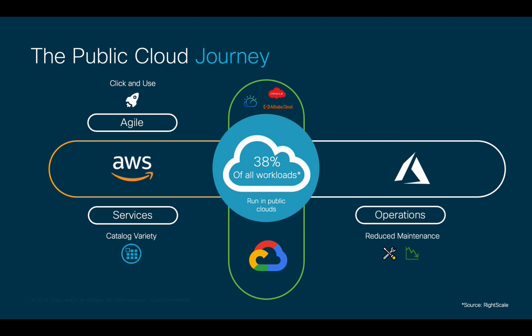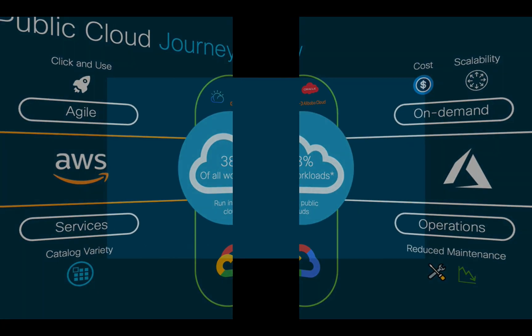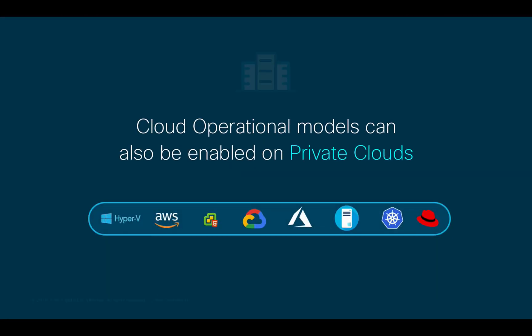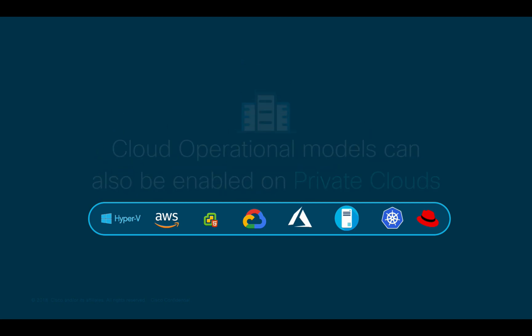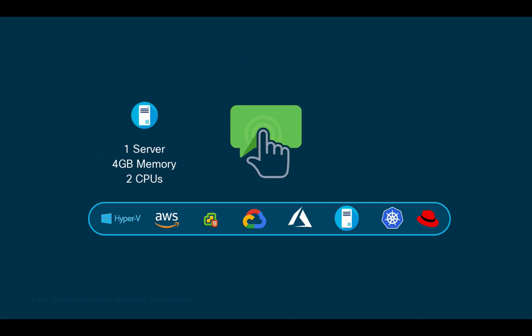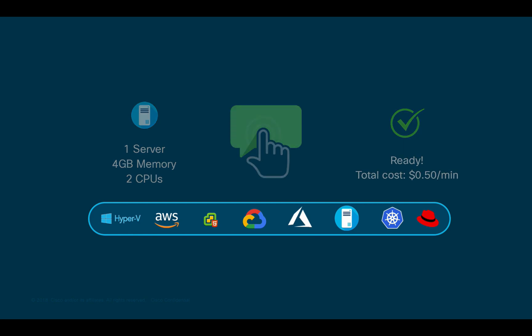However, it often involves changing purchasing models from upfront investments to on-demand, where planning budgets based on capacity and usage is part of a complete set of operational changes. While most of this automated and on-demand infrastructure could also be enabled on a private cloud, the public cloud offers a turnkey solution that is ready to be used at scale immediately.